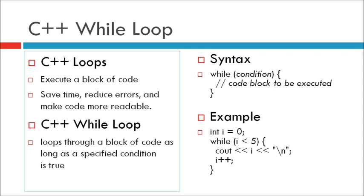In the example below, the code in the loop will run over and over again as long as a variable i is less than 5. Example: int i = 0; while (i < 5) { cout << i; i++; }. Note: do not forget to increase the variable used in the condition, otherwise the loop will never end.